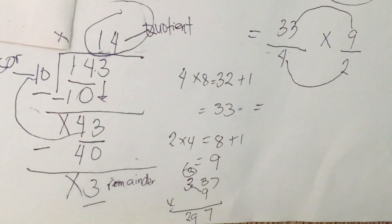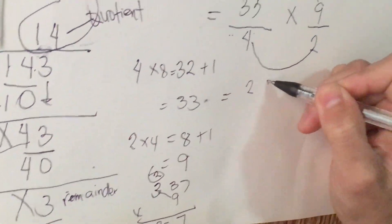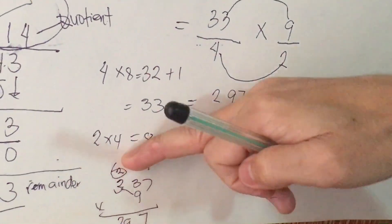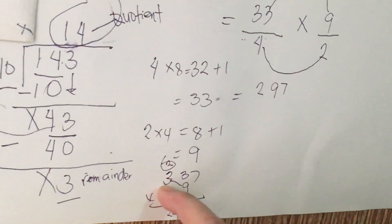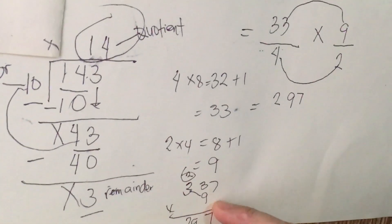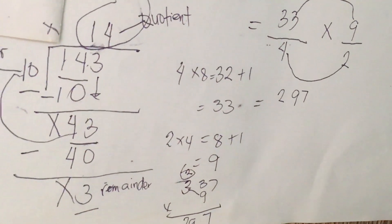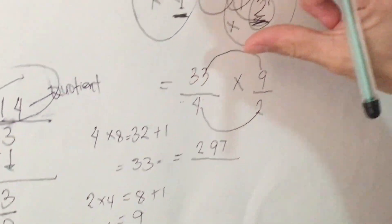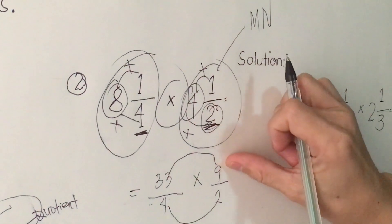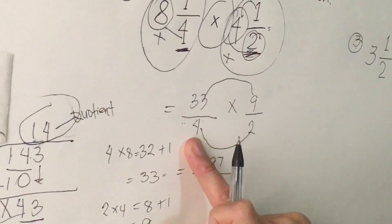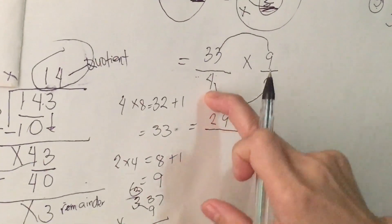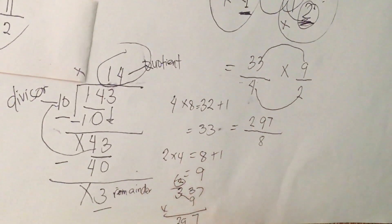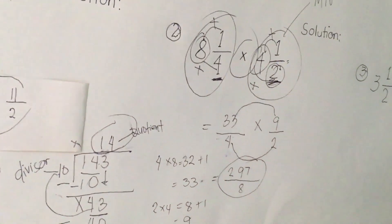297, our final answer for the first and second fraction, which is numerator 33 and 9. Next is first fraction and denominator, 4 multiplied to 2. So we have here 8, 297 over 8.